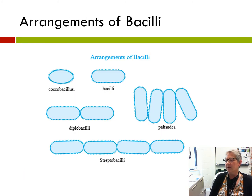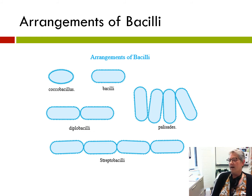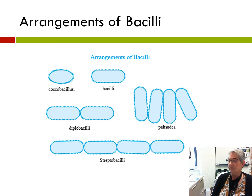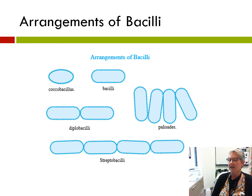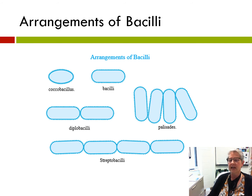Bacteria also can appear in different arrangements. Some common arrangements of bacilli are single or random. They can be diplo — appearing in pairs of two. They can be described as palisades, where the vertical lining up looks almost like a picket fence. Or bacilli can appear in chains, as in streptobacilli. The term strepto refers to chains.